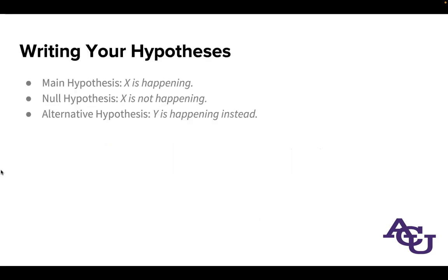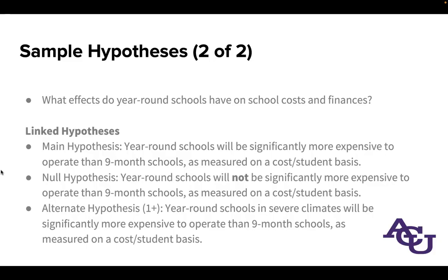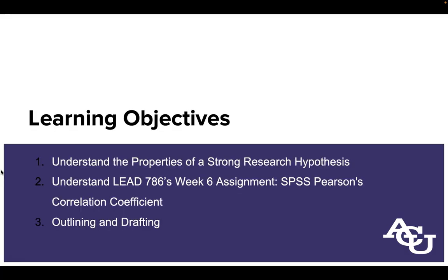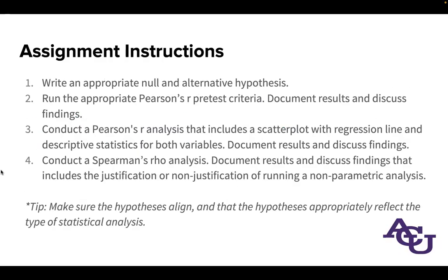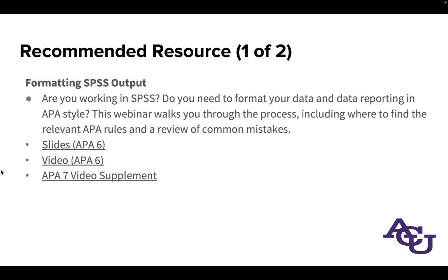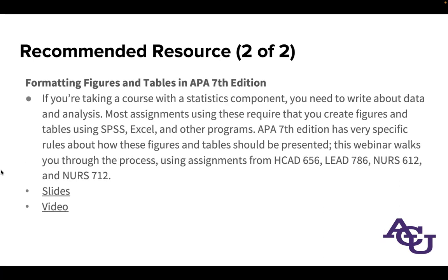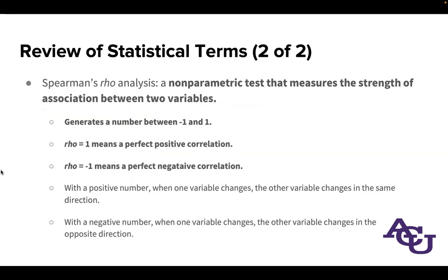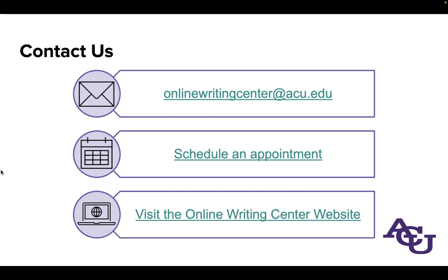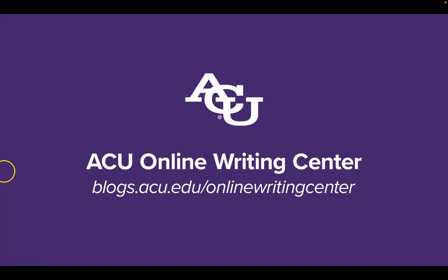So this concludes our webinar for today. Just a quick recap: we started out talking about the properties of a strong research hypothesis. We looked at a specific assignment from Leadership 786. We talked about how to translate the things you're collecting for this assignment into your write-up and using those in the outlining and drafting process. If you have additional questions about formatting in APA style for SPSS output or formatting your tables and figures in APA 7th edition, we have those recommended resource slides. If you have any other questions, please feel free to email us at onlinewritingcenter@acu.com and have a great rest of the day.